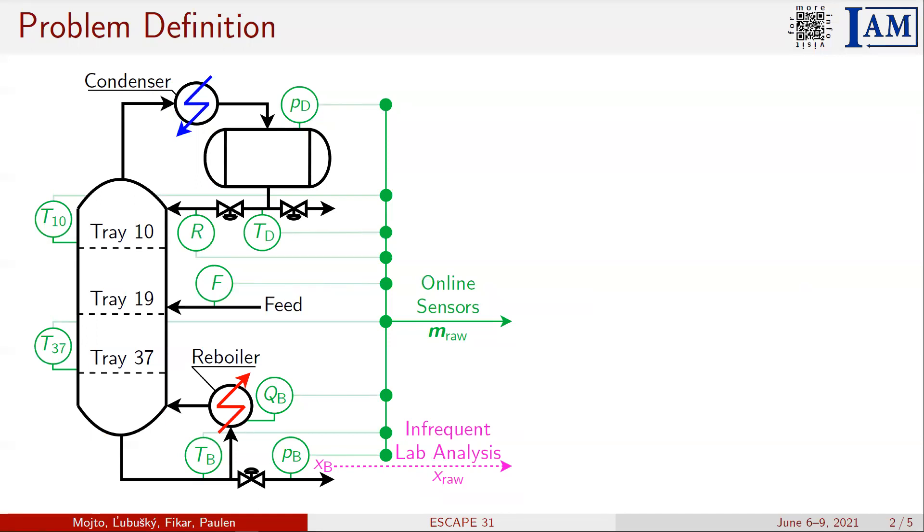The state of the depropanizer column is monitored by the bottom composition, and the measurement of this composition is performed by infrequent lab analysis. Our goal is to find online soft sensors that would be able to indicate bottom composition using online measurements and do this more frequently than the lab analysis.